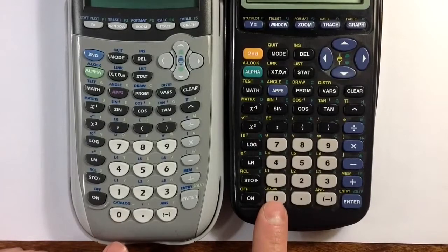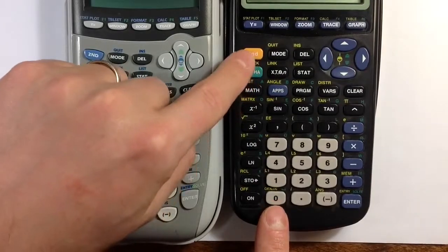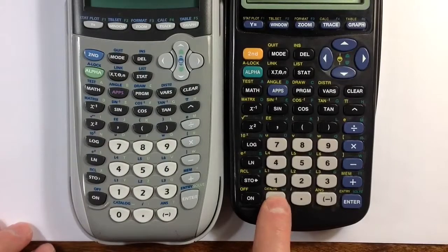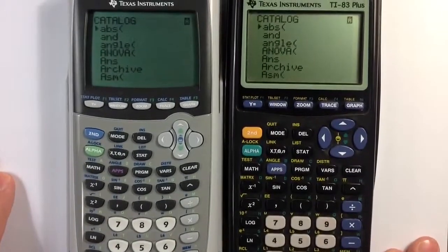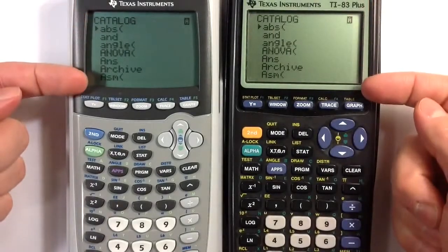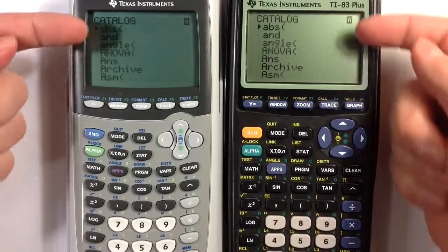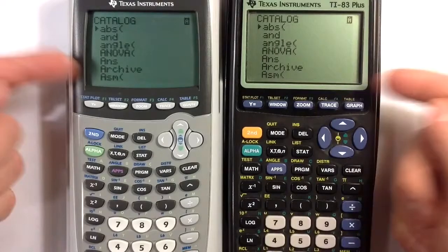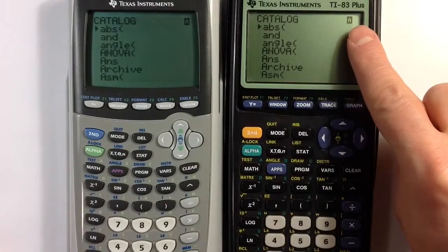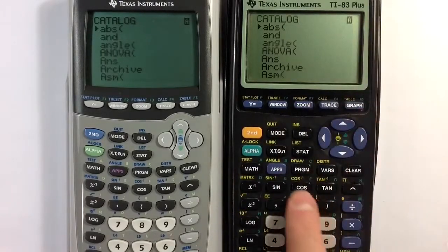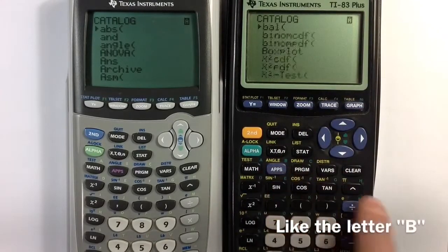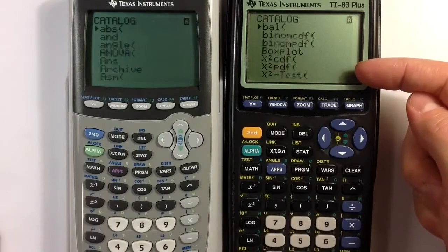The catalog is the second command above zero, so we get the second key and then choose catalog. And you can see many different commands of the calculator are listed in alphabetical order for your convenience. And the alpha setting is activated, and so if you type a letter it'll jump to that list in the catalog.